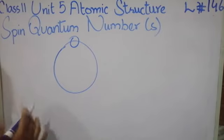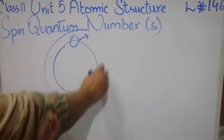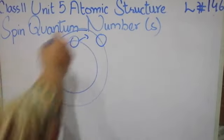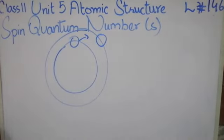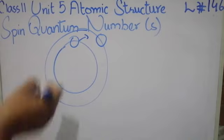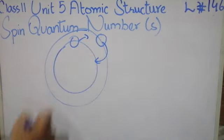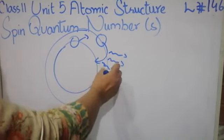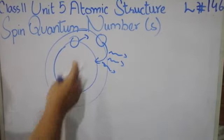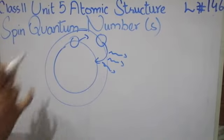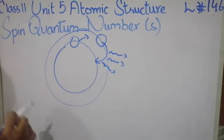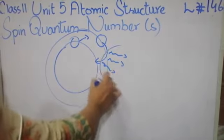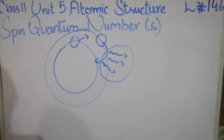When we bring alkali metals to the excited state, the electron moves to a higher shell because it has more energy. But when we look at the emission spectrum — emission meaning when the electron returns from the excited state back to the ground state — it releases some amount of energy. Using that released energy, we create the emission spectrum.